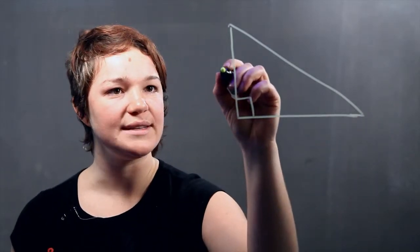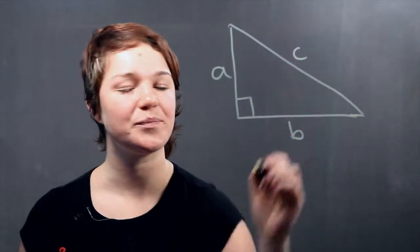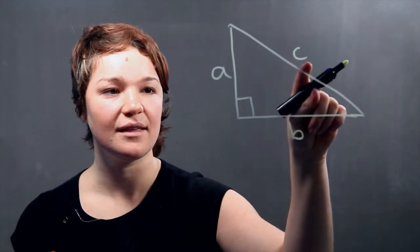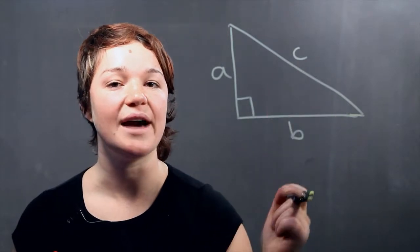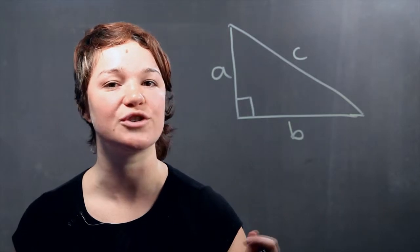And we're going to call these sides A, B, and C. Remember that C is the side that's opposite of the right angle and it's called the hypotenuse. It's the longest side in the whole triangle.